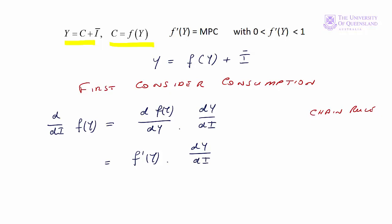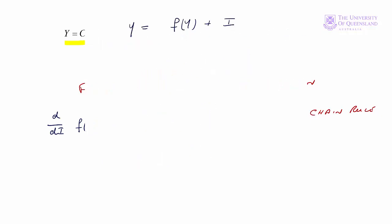Let's go back to our full equation and differentiate that. Y equals f of Y plus I implies that the derivative with respect to I, dY/dI, that's the left-hand side, is equal to, well, we found the implicit differential of the first term on the right-hand side. That's f prime Y times dY/dI. The derivative of I with respect to I is simply 1. We found our implicit differential.